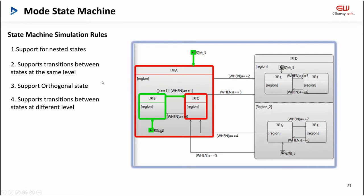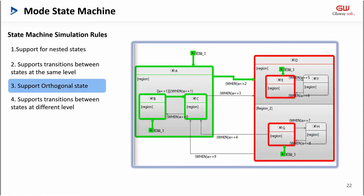Second, we support the state transition and execute at the same level. As shown in the figure, state B and state C are in the same level. Third, we support orthogonal state, also called parallel state. It supports a number of regions in one state. Each region is regarded as an independent area, and the state in different regions can be executed independently.